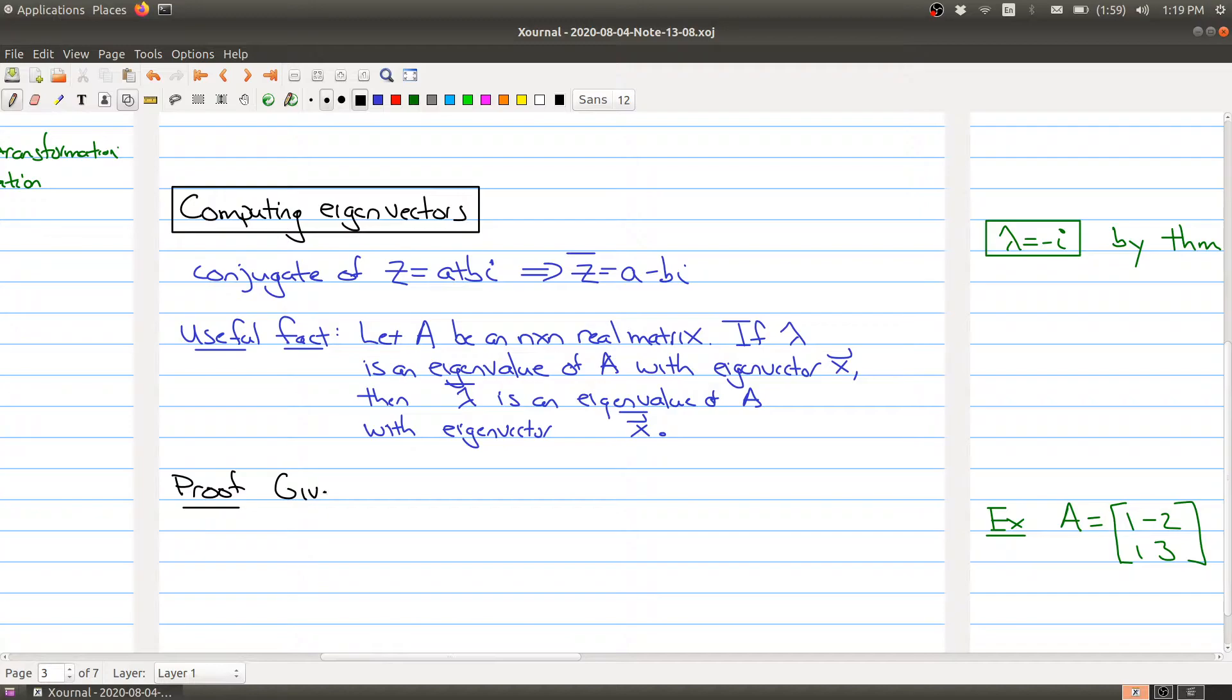We're given this information. The x and the lambda satisfy this condition right here. What this means is that if I take the conjugate of both sides, they're the same thing, because they're the same numbers, or the same vectors. If I take the conjugate on both sides, I get the same thing.